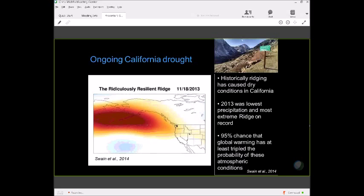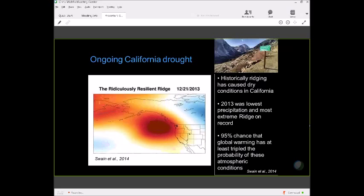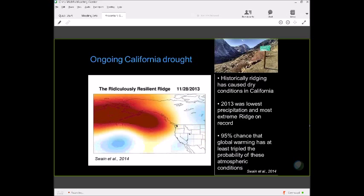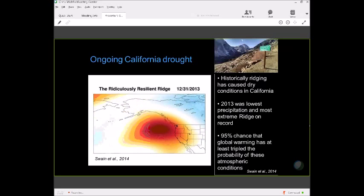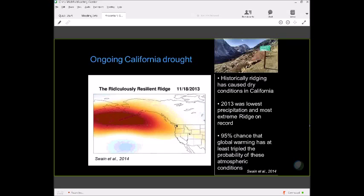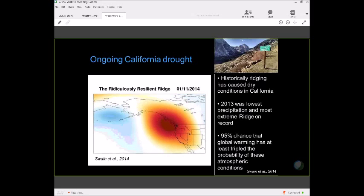What happened during this calendar year was this ridiculously resilient ridge was particularly resilient. It was so resilient, it was ridiculous. This is an animation from Daniel showing the monthly scale geopotential heights for mostly the fall of 2013, just as an example. And you can see this is a dynamic feature, even at the monthly scale. It moves around.